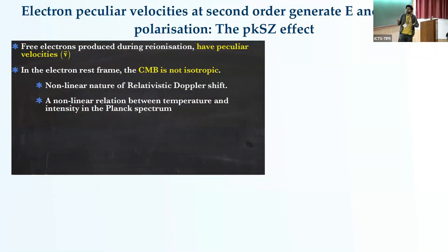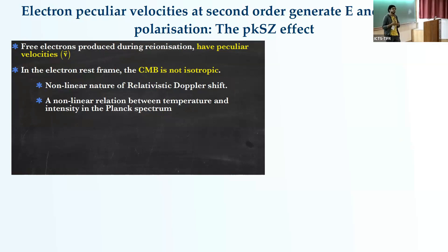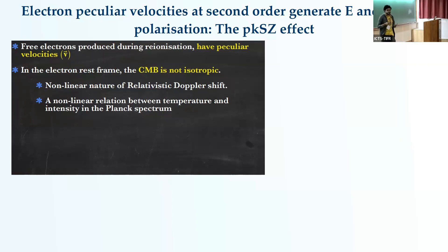During the time of reionization there are lots of free electrons with peculiar velocities. If you go to the electron rest frame, you will see that the CMB is not isotropic — multipoles of all orders are present. This is primarily because of the non-linear nature of the Doppler shift when transforming between frames, and also because of the non-linear relation between temperature and intensity in the Planck spectrum.